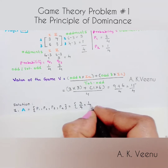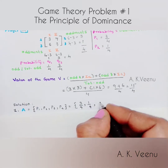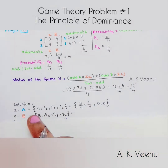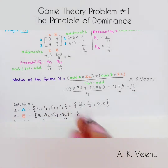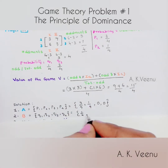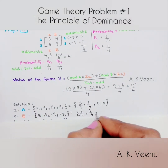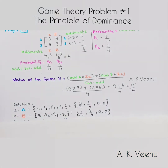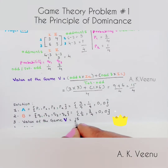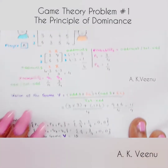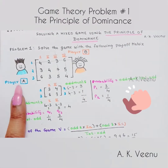The optimal strategies of player A are (3/4, 1/4, 0, 0) and the optimal strategies of player B are (1/4, 3/4, 0, 0). The value of the game is 15/4. Since the value of the game is positive, the game is favorable to player A.